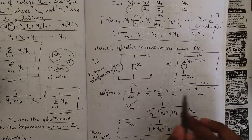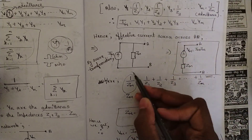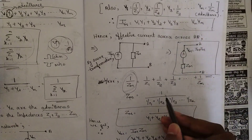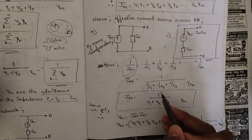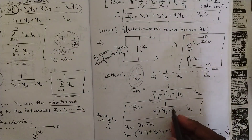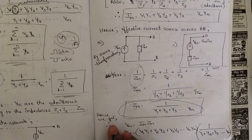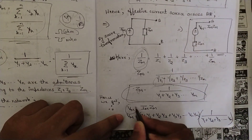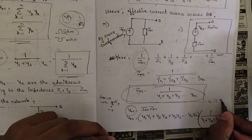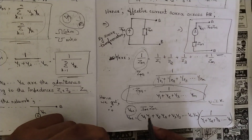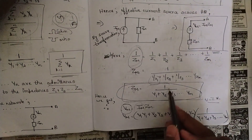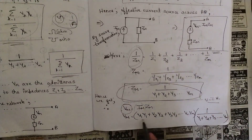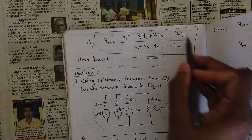For Zm: 1/Zm = 1/Z1 + 1/Z2 + 1/Z3, so taking the reciprocal gives Zm = 1 / (1/Z1 + 1/Z2 + ...) = 1 / (Y1 + Y2 + ...). Now our goal is to find Vm. By Ohm's law, V = I·R, so Vm = Im · Zm. Multiplying Im (which is V1·Y1 + V2·Y2 + ...) by Zm (which is 1 / (Y1 + Y2 + ...)) gives us the final Vm formula as already stated.